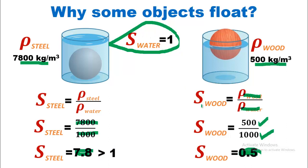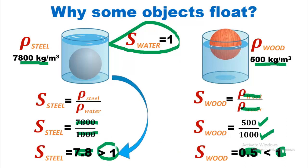7.8 is greater than 1, which is the specific gravity of water, whereas 0.5 is less than 1. So the object or substance having a specific gravity greater than 1 will sink in water. Similarly, if the object has a value less than 1, it will float in water. This is the simple answer to why certain things float and certain things sink in water. Please subscribe to the channel and don't forget to press the bell icon to get video updates.